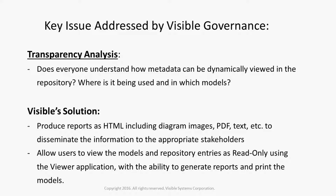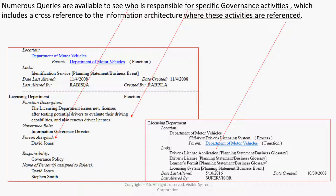You can allow users to view the models and repository entries as read-only using the Visible Viewer application. These users have the ability to generate reports and print the models. Numerous queries are available to see who is responsible for specific governance activities, which includes a cross-reference to the information architecture where these activities are referenced.